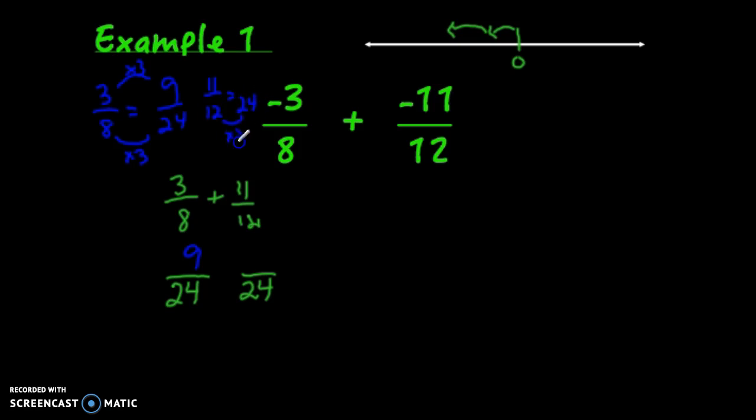12 times 2 is 24, so scaling up 11 times 2 gives you 22/24. Now add these numerators: 9/24 plus 22/24 equals 31/24. Keep the denominator the same and add the numerators.